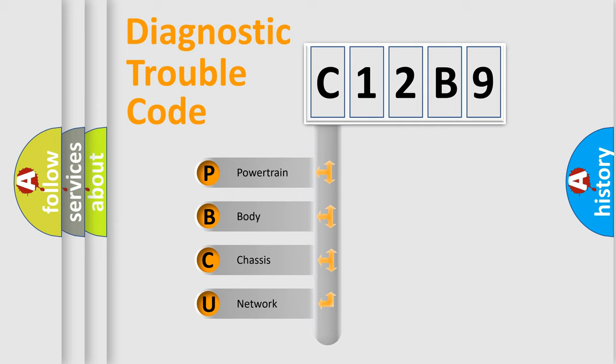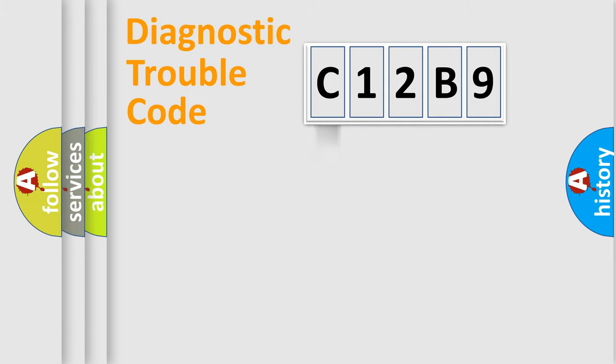We divide the electric system of automobile into four basic units: powertrain, body, chassis, network. This distribution is defined in the first character code.